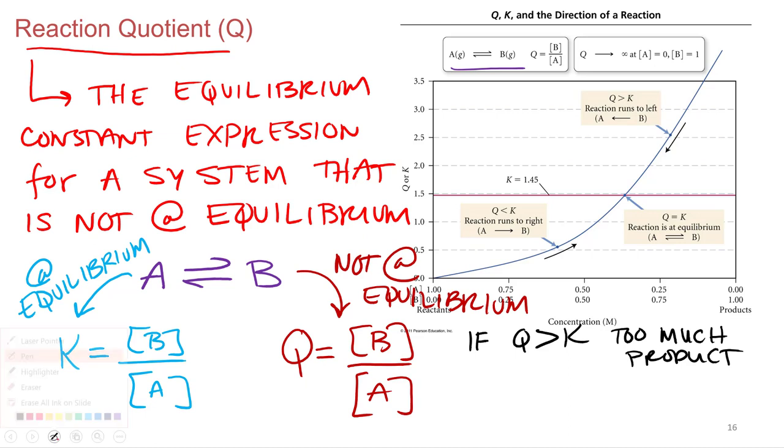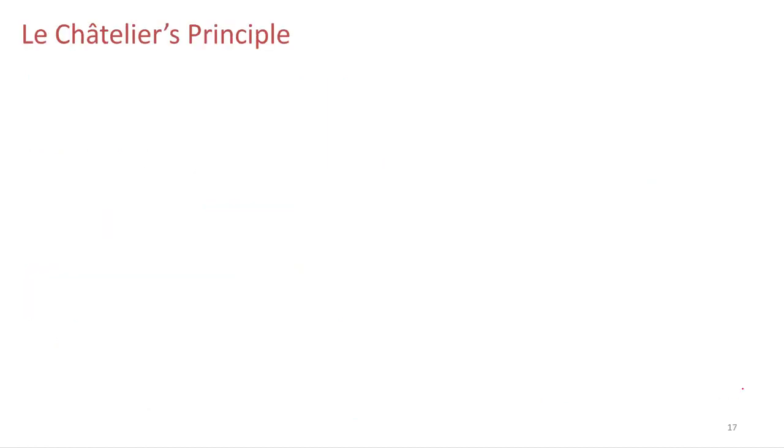And then, conversely, if we have a scenario where Q is less than K, that means this ratio is a smaller number than this ratio. The Q ratio of the products over reactants in Q is smaller than the ratio of products over reactants in K. That means you have too much reactant relative to equilibrium.